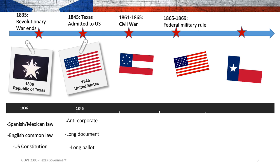In 1845, when Texas was admitted to the United States, that was the first constitution of Texas as a state. It was a very long document, anti-corporate — meaning it did not favor corporations and favored protection of the individual. It yielded a long ballot, meaning there were a lot of decisions voters had to make. We elected a lot of different people because of what the constitution provided, and that's the beginning of our long ballot.